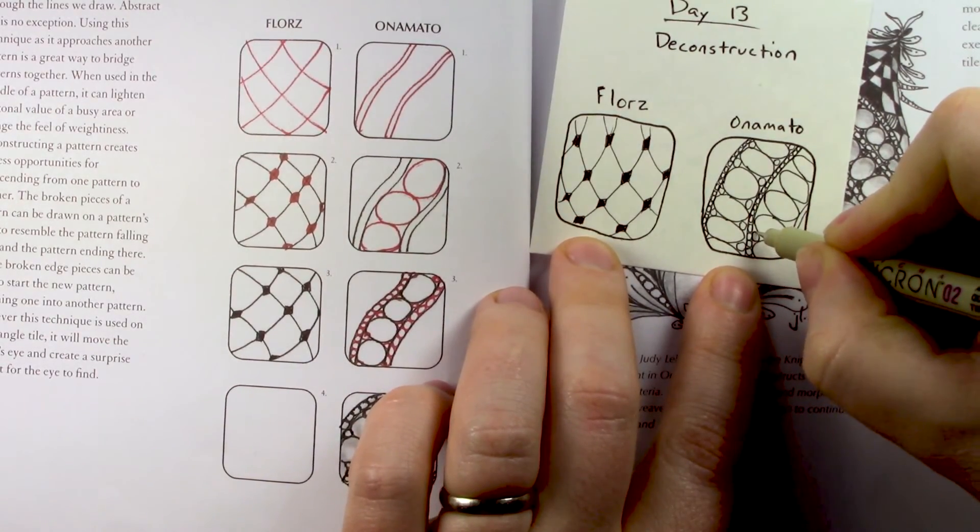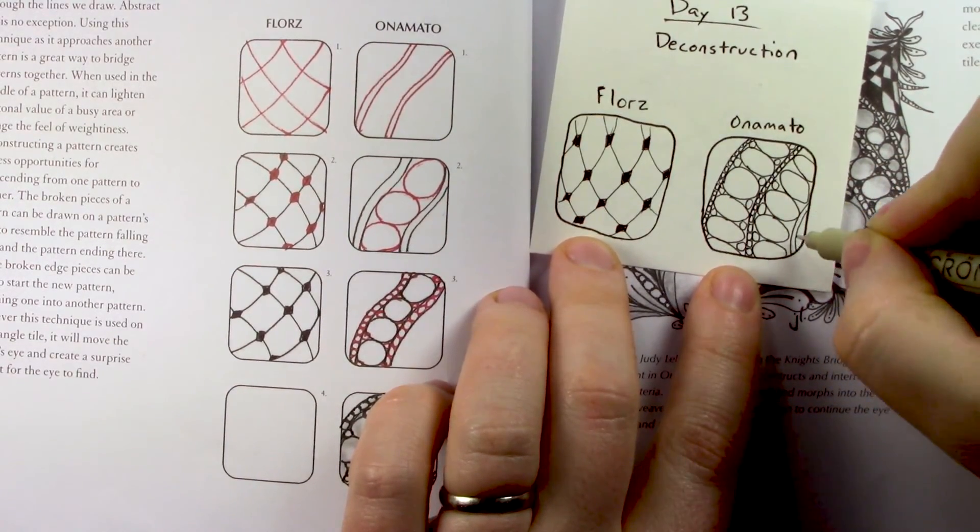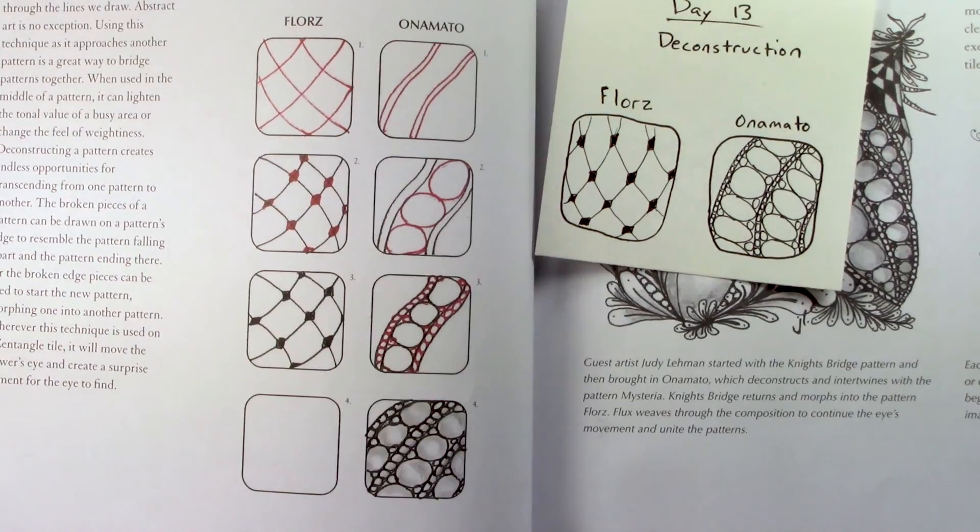And then we just do exactly the same thing, filling in with circles and then filling that ribbon with circles too. Like that.